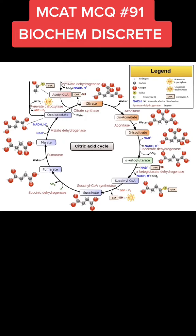You're gonna have to know what's gonna increase the activity of the pyruvate dehydrogenase complex. One really important tip for biochemical pathways is that intermediates of a specific metabolic pathway — and excess of these intermediates — will inhibit that metabolic pathway. And a lack of these intermediates will upregulate that pathway.